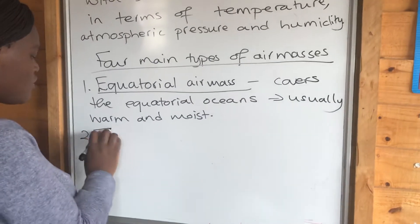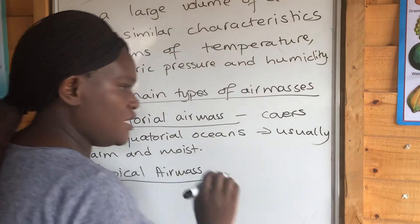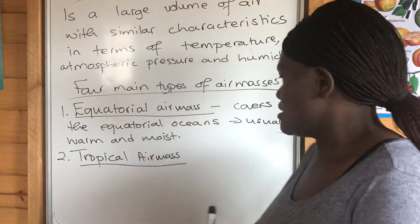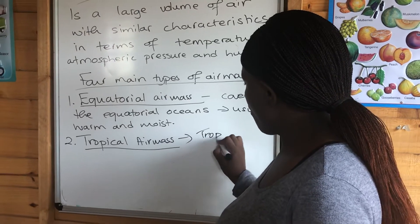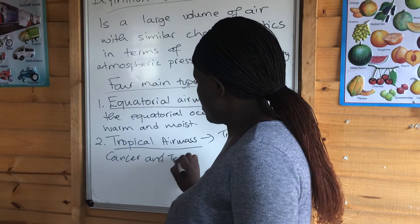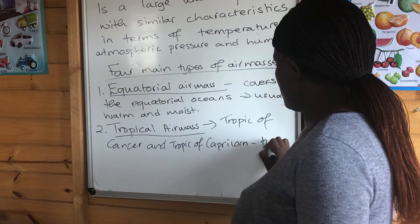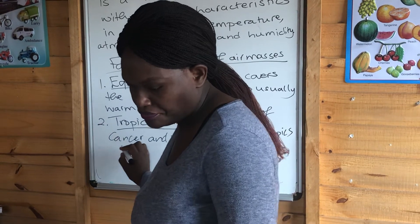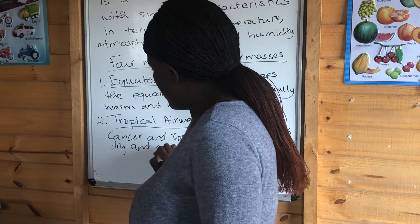Number two, you've got the tropical AMSs. Where do these develop? The tropical AMSs develop within the areas of the Tropic of Cancer — so they're within the tropics. These ones are usually dry and stable AMSs.